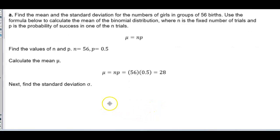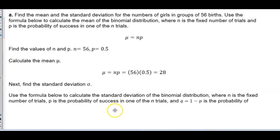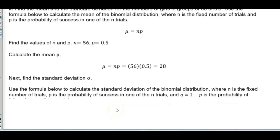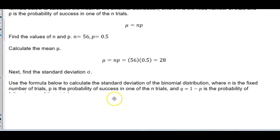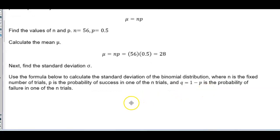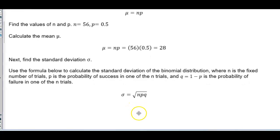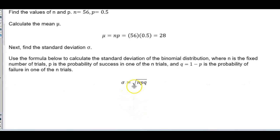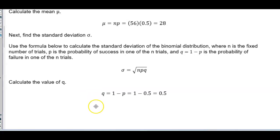Now we need to find the standard deviation using the formula for the binomial distribution, where n is the fixed number of trials, p is the probability of success, and q equals 1 minus p is the probability of failure. The formula is sigma equals the square root of n times p times q. We calculate q first: q equals 1 minus p, and since p is 0.5, q equals 0.5.